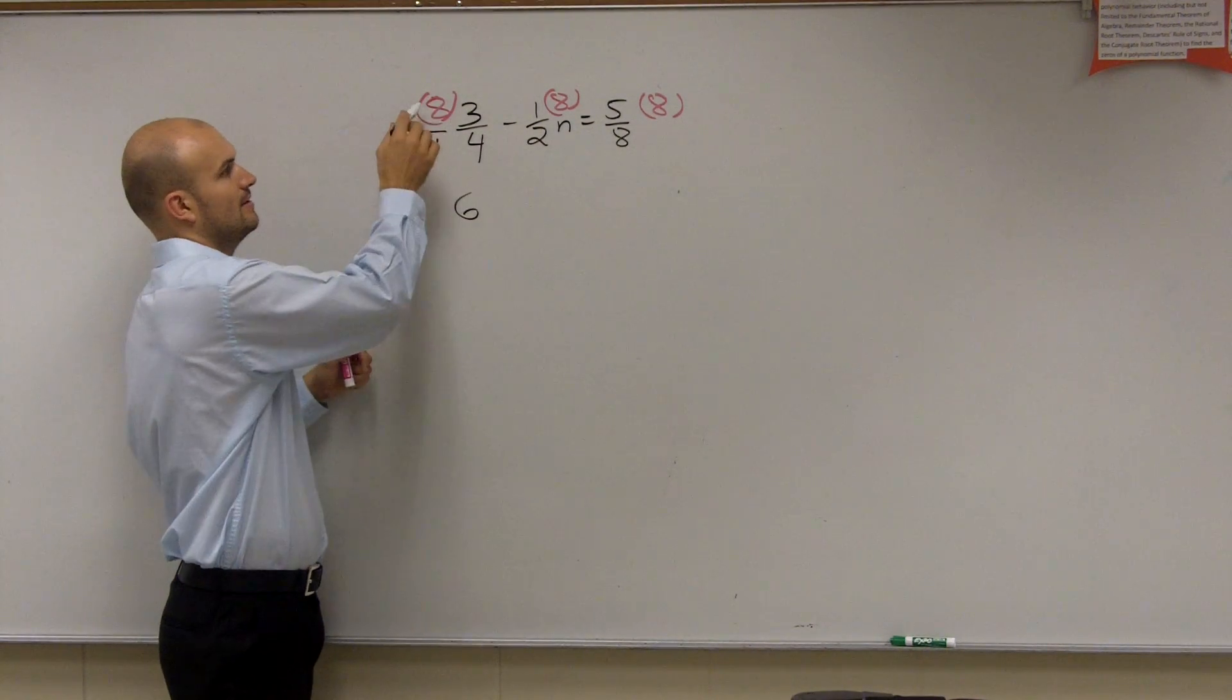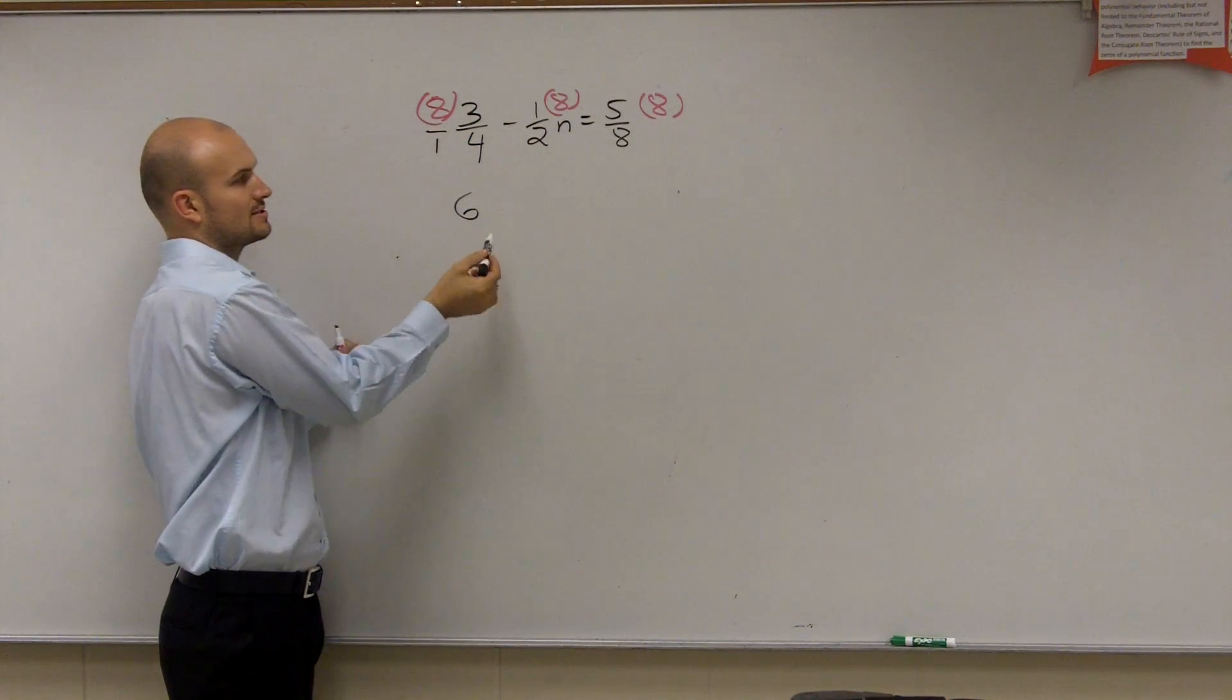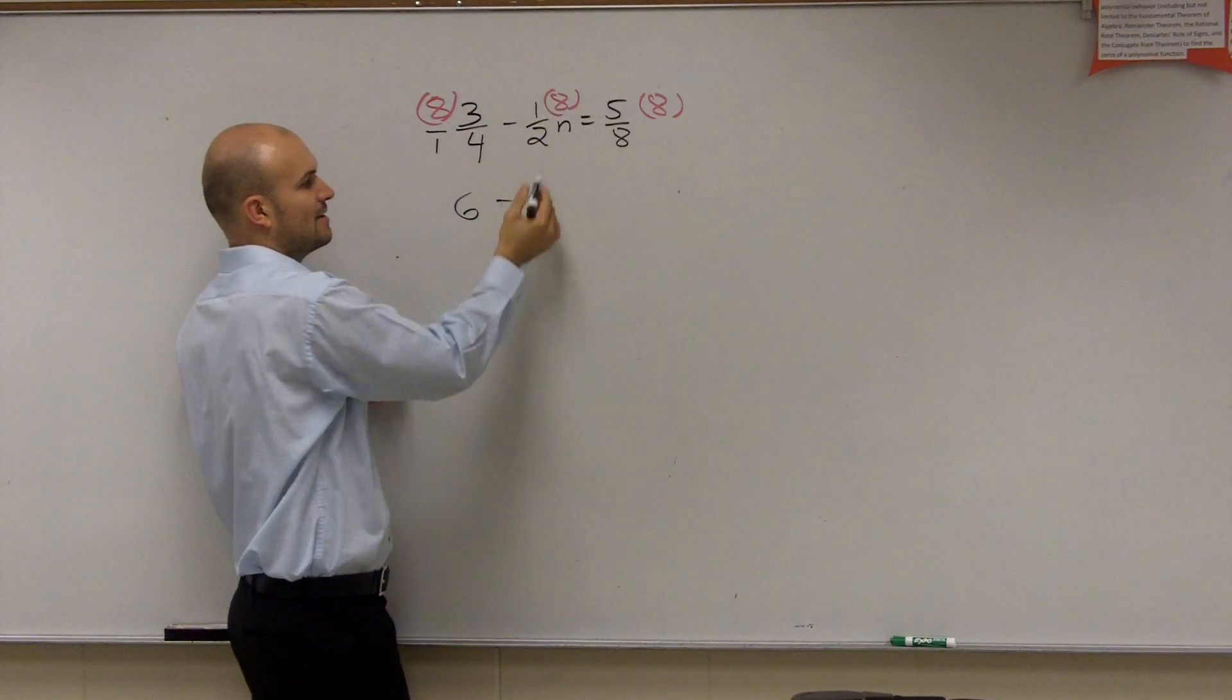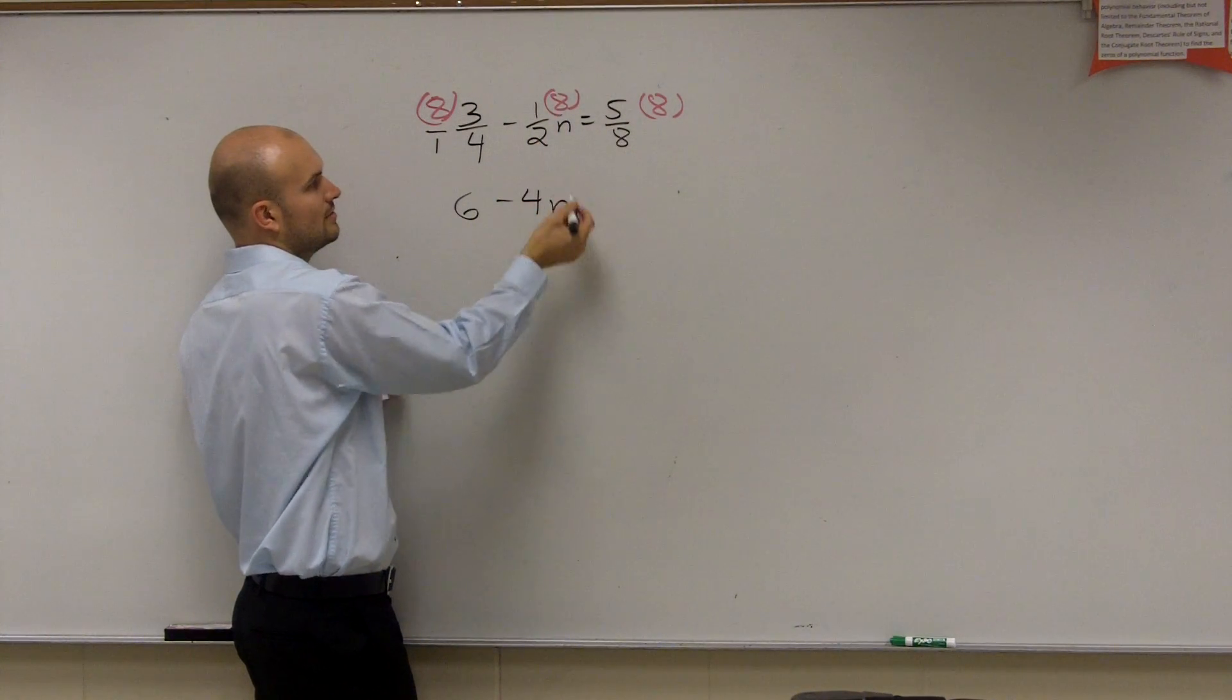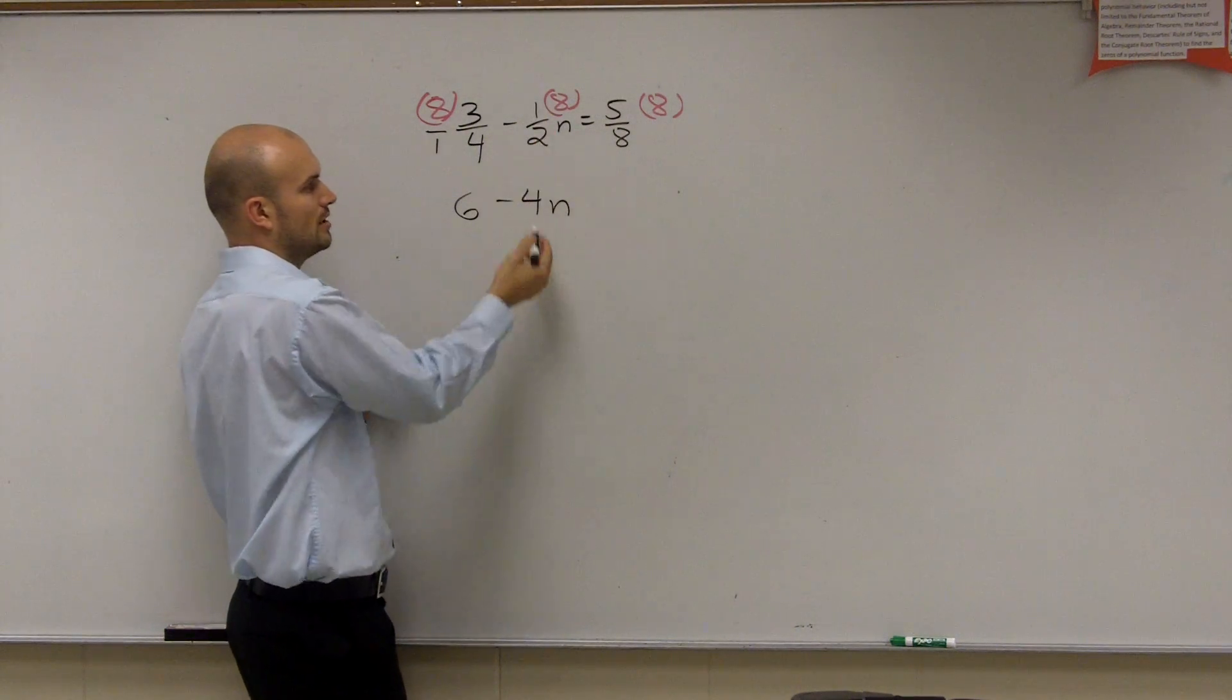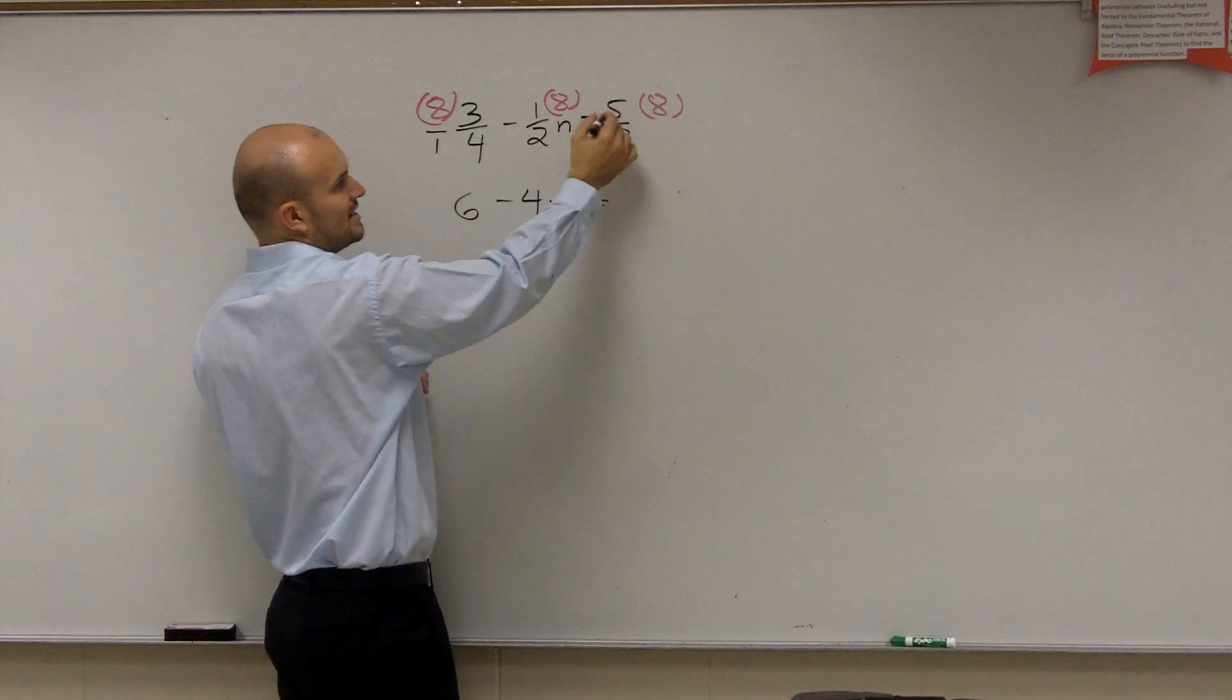You can also look at it this way. 8 divided by 4 is 2. 2 times 3 is 6 minus 1 times 8 is 8. 8 divided by 2 is 4n. Or 8 divided by 2 is 4 times 1 is 4.